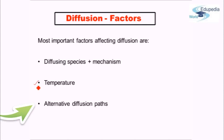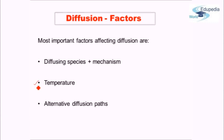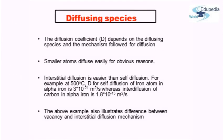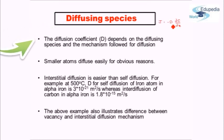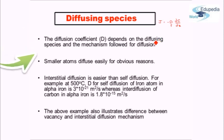Let's begin by discussing the diffusing species and the mechanism factor. As we have seen, J depends on the diffusion coefficient D, and this diffusion coefficient is itself dependent on what is the diffusing species present and what is the mechanism being followed for diffusion. For example, if the atom taking part is small in size, then it will be easier for that atom to diffuse. Smaller sized atoms can easily diffuse, so for small sized atoms the diffusion coefficient will be large.